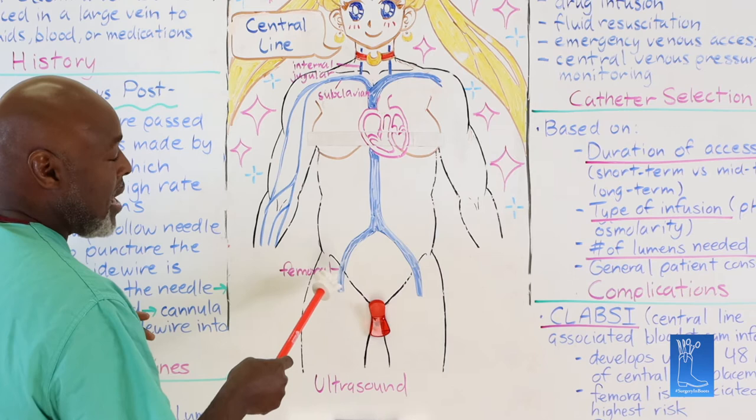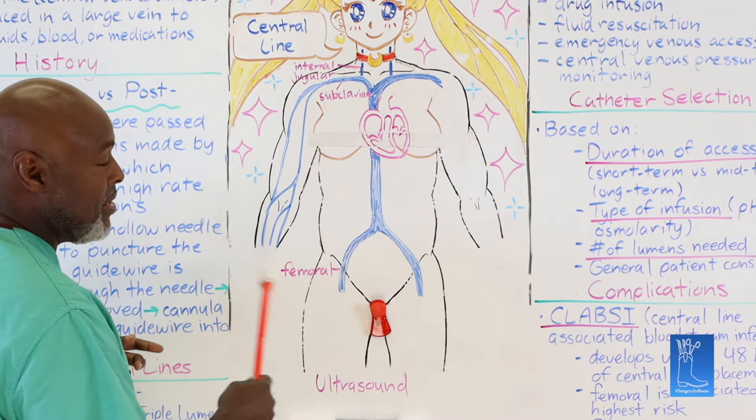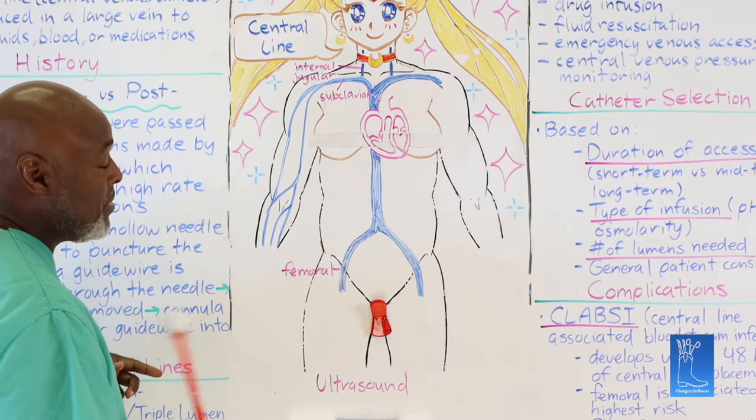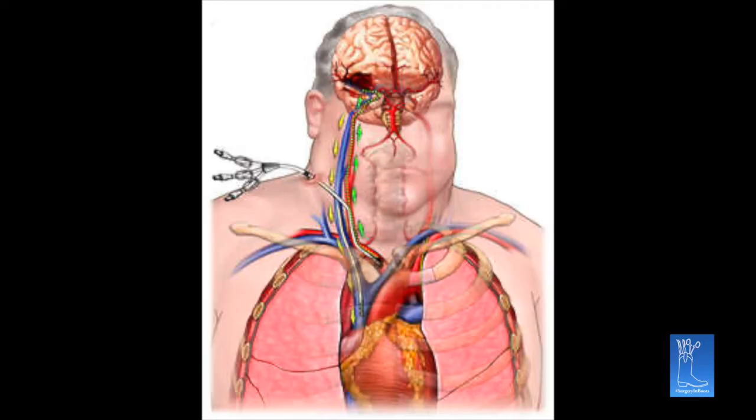Femoral: artery, vein, nerve, empty space — safer. The downside of a femoral line is that if you have a well-built person, it's sometimes hard to find the femoral vein, and you can have up to four, five, or six inches of subcutaneous tissue before you get to it.